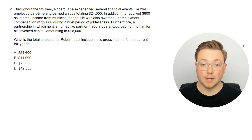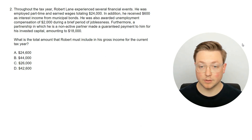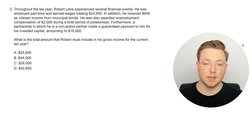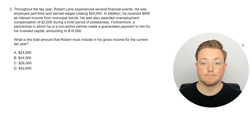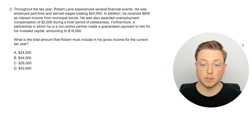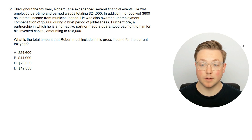Let's go to the next question. Throughout the tax year, Robert Lane experienced several financial events. He was employed part-time and earned wages totaling $24,000. In addition, he received $600 as interest income from municipal bonds — municipal meaning something like in a city or locality. He was also awarded unemployment compensation of $2,000 during a brief period of joblessness. Furthermore, a partnership in which he is a non-active partner made a guaranteed payment to him for his invested capital amounting to $18,000. What is the total amount that Robert must include in his gross income for the current tax year?